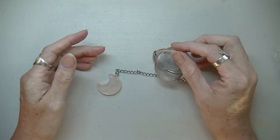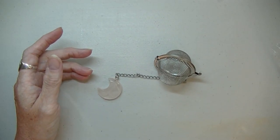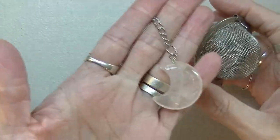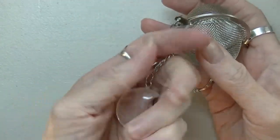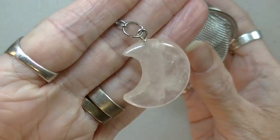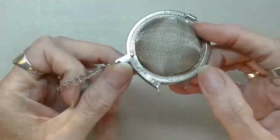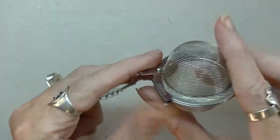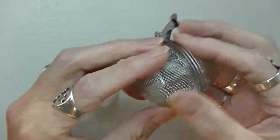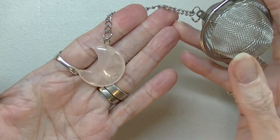Those of you that drink tea will know what these are. They are tea strainers. It has a quartz crystal on it, a quartz crystal moon. Isn't that beautiful? It's a fairly big tea strainer and it has a very sturdy latch on it. I am just so excited about this.